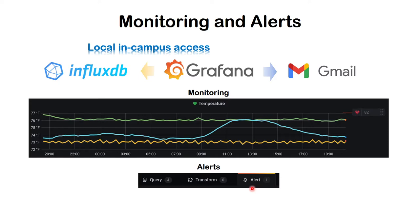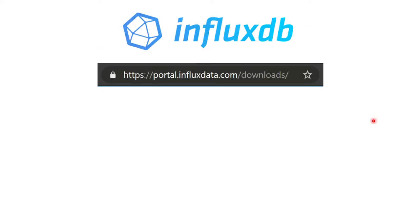Grafana also has alerting networks. In our case I use Gmail — so anything out of normal, in this case temperature above 82°F, sends me an email. That is one of the powerful things you can do once you have data in the InfluxDB database.